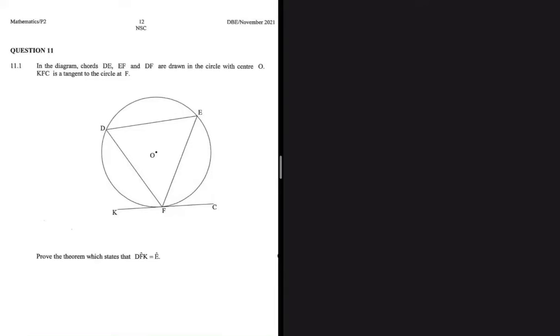In the next four minutes we're going to prove the tangent-chord theorem in four easy steps. The first step is to make a construction. We construct a diameter that passes through point O.